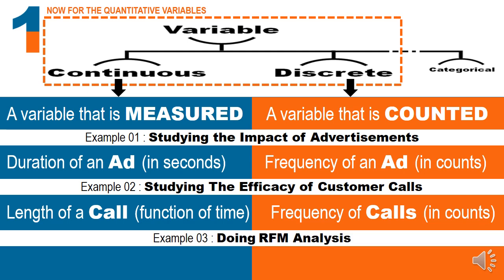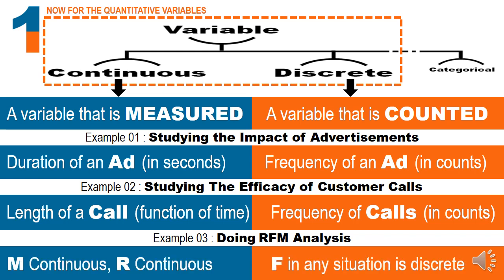Moving to my favorite topic of RFM analysis — for those watching my videos regularly, there are already two videos on why RFM and how RFM. Which of these is continuous? Monetary is obviously continuous: between the lowest and highest bill value, I can have a slew of monetary values in a continuous pattern. Recency is also continuous if I am looking at the database over a widespread of time. But frequency — the number of times a customer has dropped into the shop — is a count; it is a discrete variable.